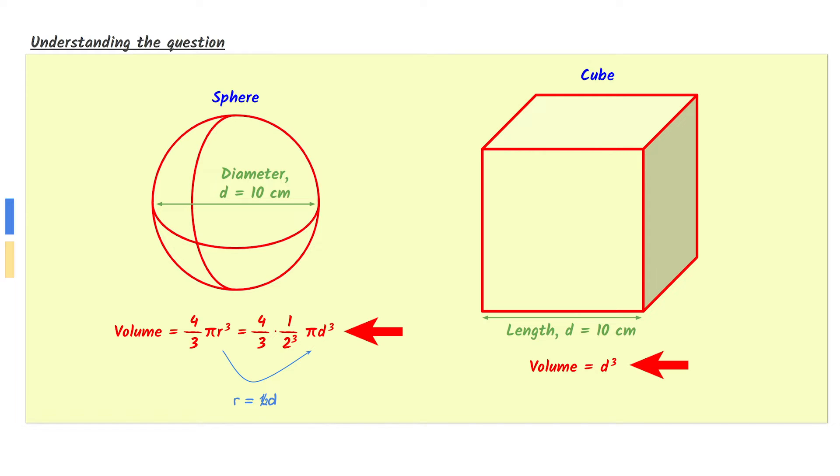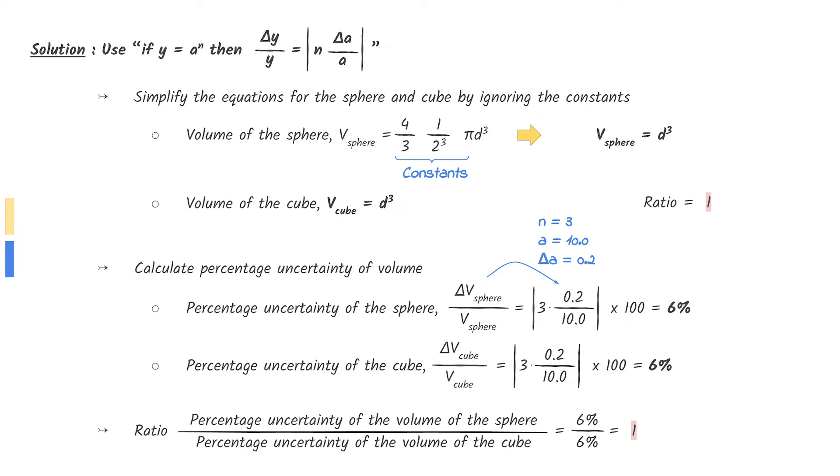First, let us write down the equations of volume in terms of d. Since we are calculating the uncertainty, we can ignore all the constants in the equation and simplify our equation.